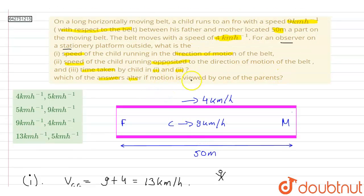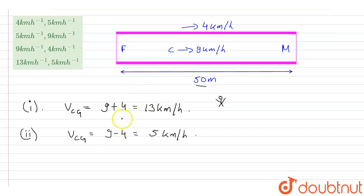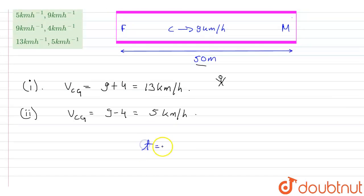In the third part, we find the time taken by the child in cases 1 and 2. In both cases, the total distance of 50 meters will remain the same, and the velocity of the child — that is 9 km/h — will also remain the same. Even though the belt is moving at 4 km/h, the child has to cover the same 50 meters in each direction at the same speed. So the time in both cases will be the same, equal to distance divided by velocity of the child.